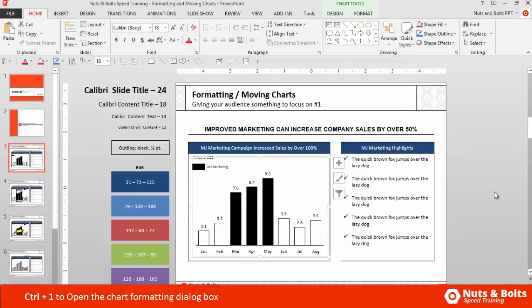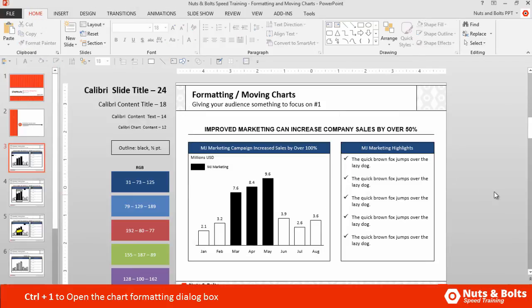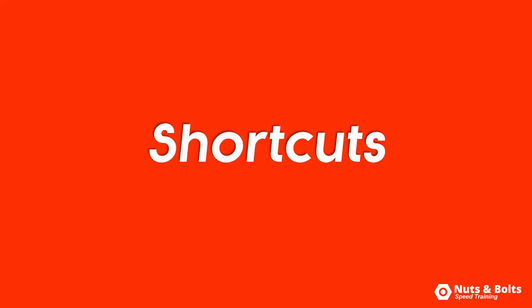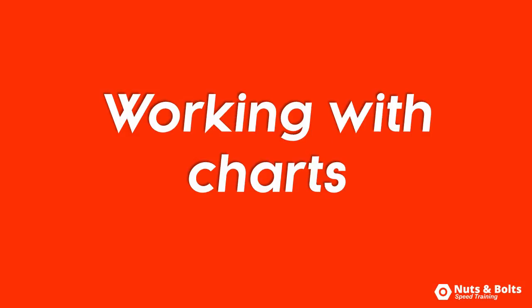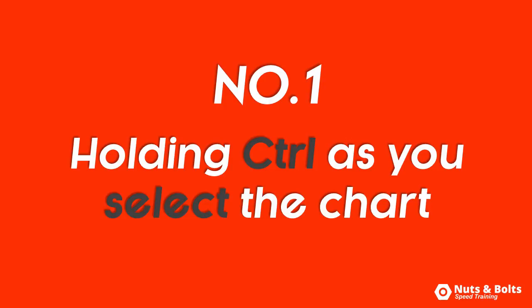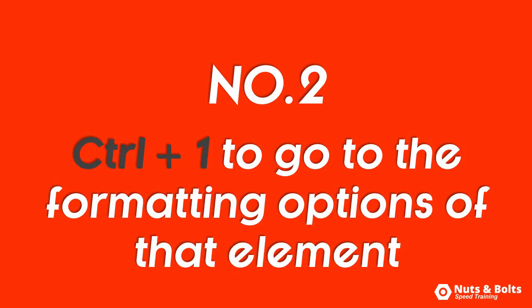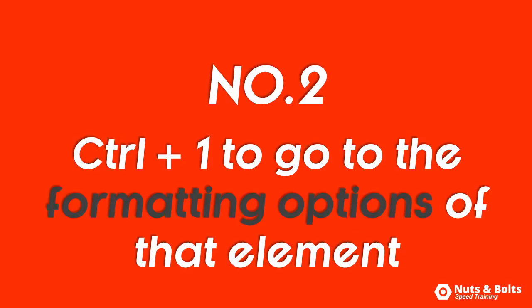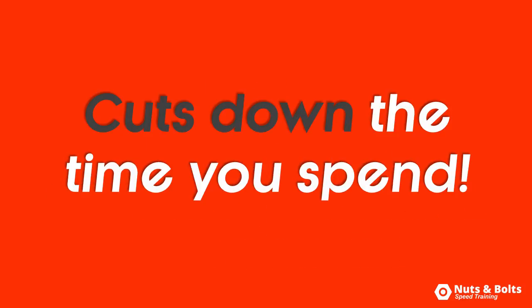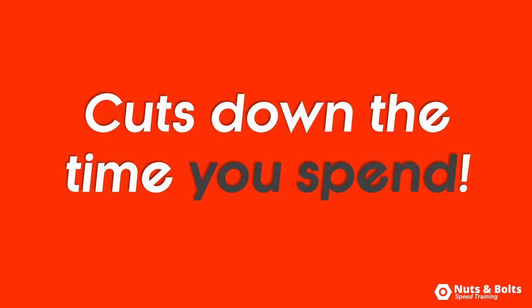So that's how to quickly format the individual elements within your charts. Those are your two keyboard shortcuts for working with your charts. Number one, holding down the CTRL key as you select a chart to select it as a normal object that you can then move around with your arrow keys. And number two, the CTRL+1 keyboard shortcut to get the specific formatting options for your chart elements, which will cut down the time you spend hunting around for the correct formatting options.